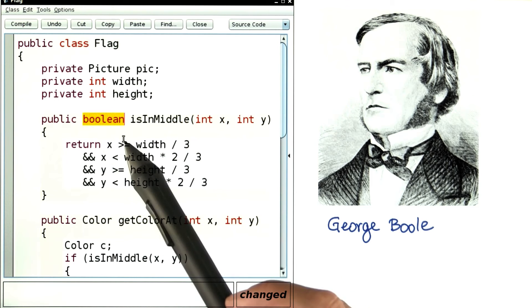Here it is. So when you have a method that can return a condition that's true or false, you declare it as a Boolean method.